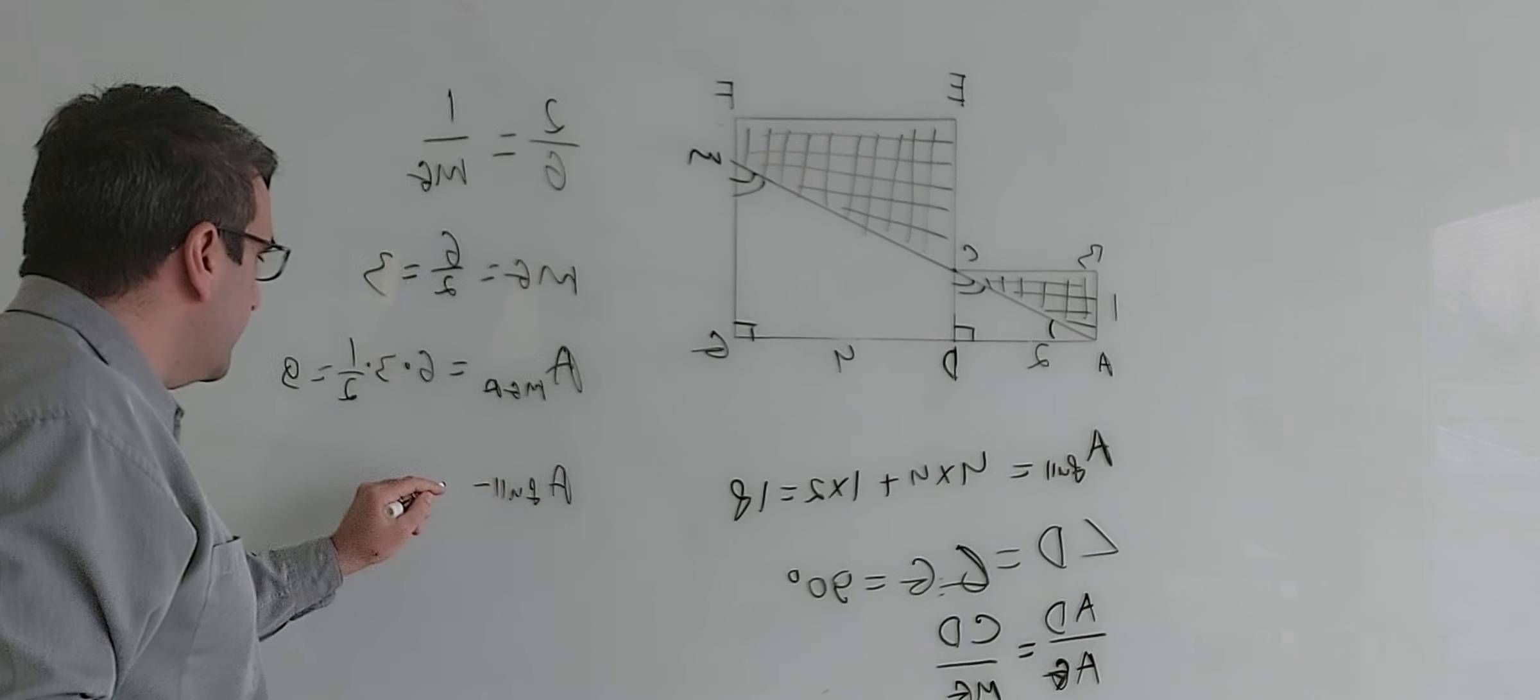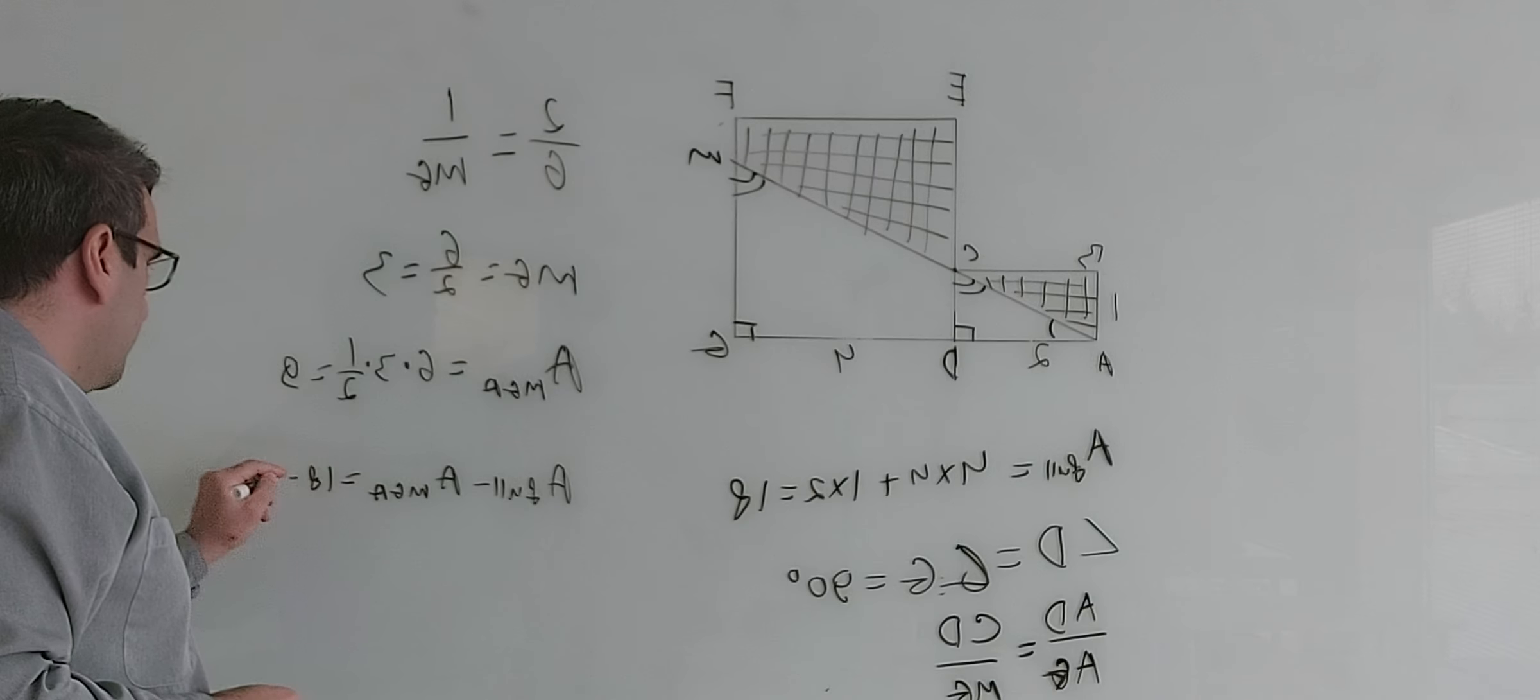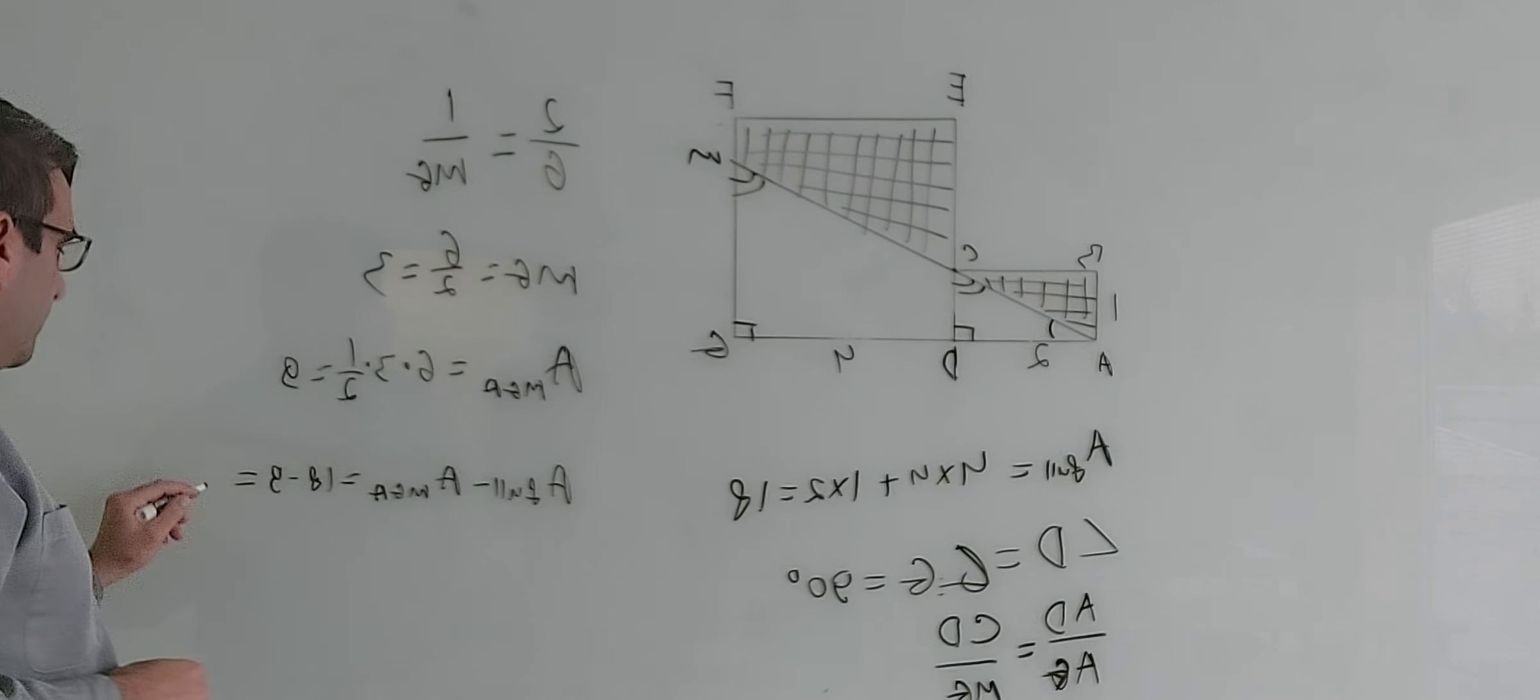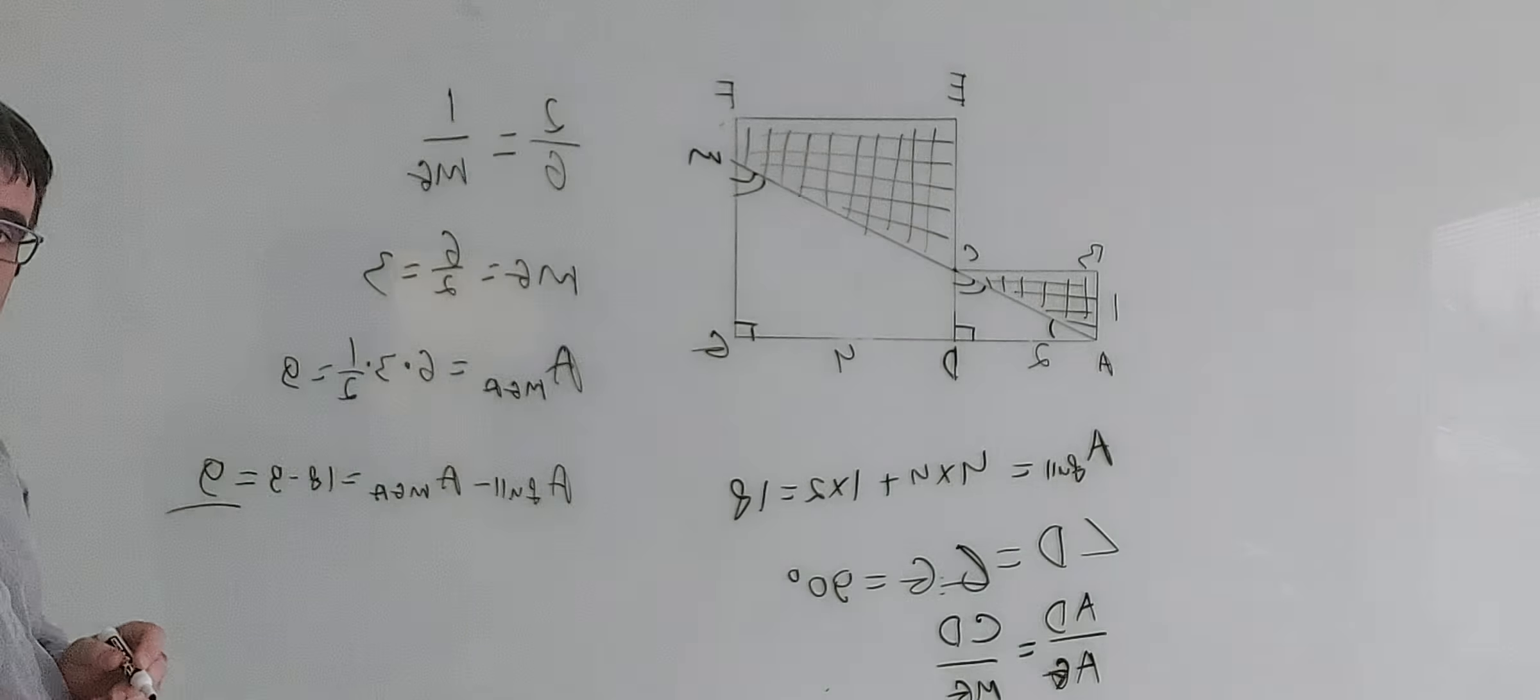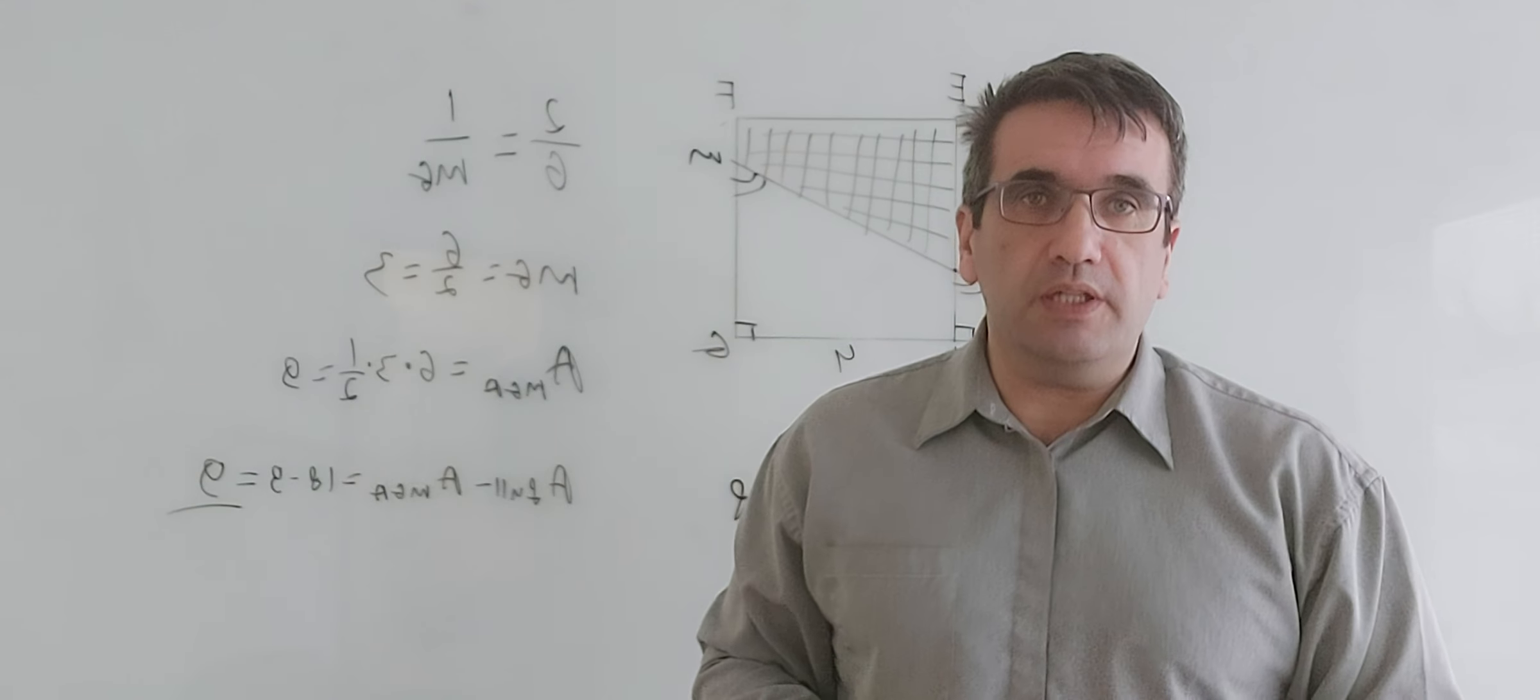So the area of the shaded region is full area minus area of triangle MGA equals 18 minus 9 equals 9. Okay, so we are done. Thank you for watching, I'll see you next time.